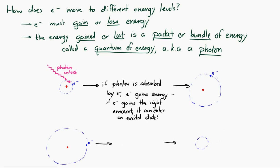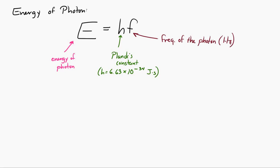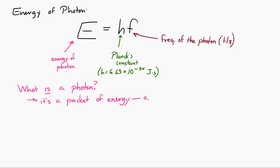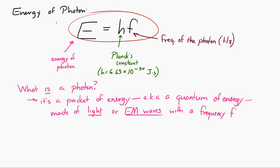The energy of a photon is given by the equation E equals H times F. E represents the energy of the photon. H is Planck's constant, equal to 6.63 times 10 to the negative 34 joule seconds. And F is the frequency of the photon in Hertz. A photon is a packet of energy, also called a quantum of energy, and we think of it as being made of light or electromagnetic waves with a frequency given by E equals HF. A higher energy photon would have a higher frequency wave associated with it.